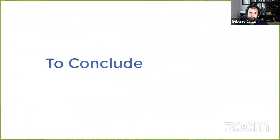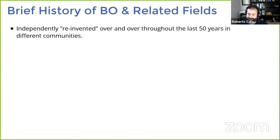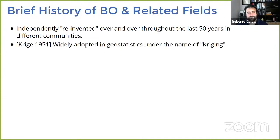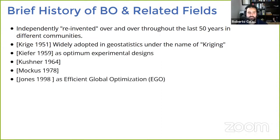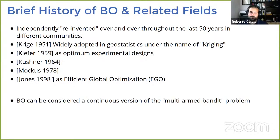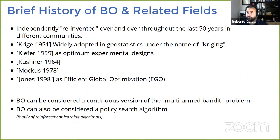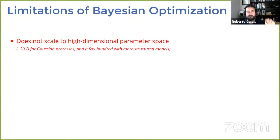To conclude: Bayesian optimization has been reinvented over the last 50 years under many names — Kriging, optimum experimental design, efficient global optimization — they're all essentially Bayesian optimization. It can be considered a continuous version of the multi-armed bandit problem, and also a policy search algorithm, essentially reinforcement learning in the stateless case. Limitations: it's great for fewer than 30 parameters but suffers above 30, becoming very data inefficient. As a global optimization, there are no convergence guarantees in the most general case. If the underlying function is difficult to model with your chosen response surface, results will often be poor.